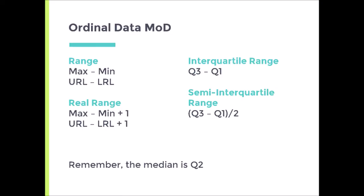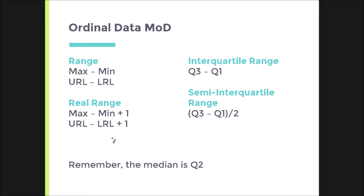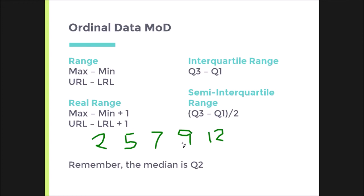If you have ordinal data, you capitalize on the fact that you have these data in some form of order. You could write them all in order first. So if I had a set of numbers like 2, 5, 7, 9, and 12, and I have them in order, I can identify the median — the number at the 50th percentile that splits the data in half. In this case, it would be 7.